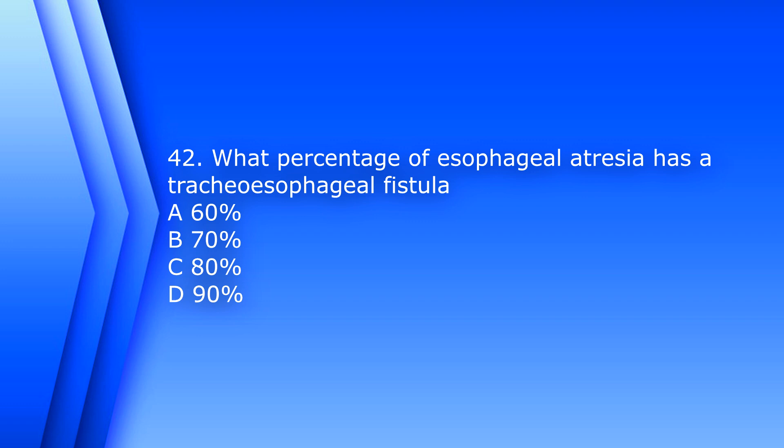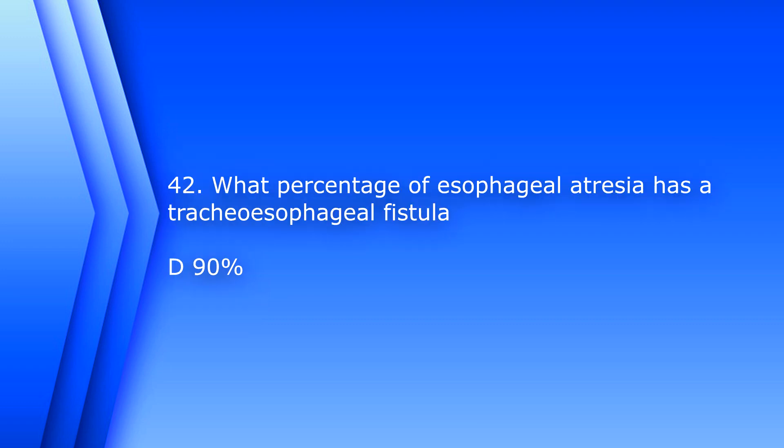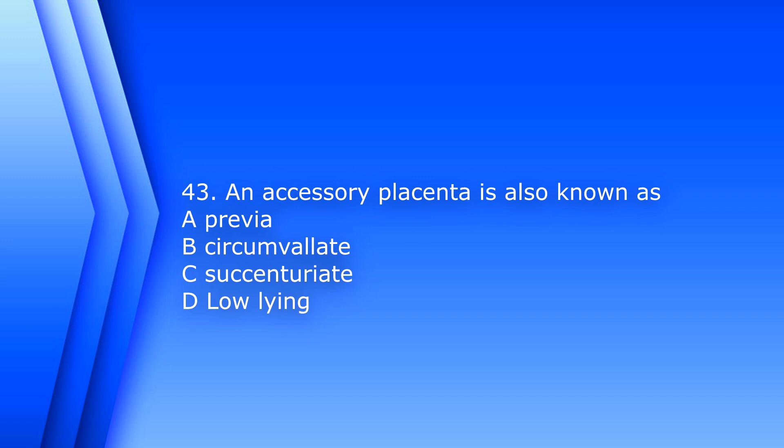Question 42: What percentage of esophageal atresia has a tracheoesophageal fistula? A) 60%, B) 70%, C) 80%, or D) 90%. The answer is D, 90%. Question 43: An accessory placenta is also known as A) previa, B) circumvallate, C) succenturiate, or D) low lying. The answer is C, succenturiate.